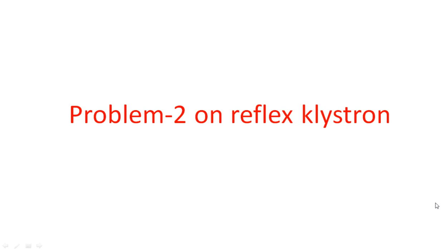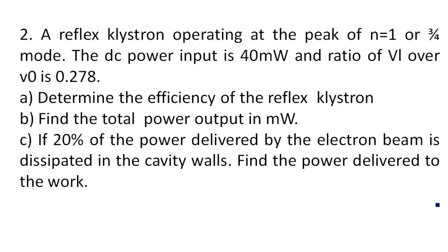In this video I am going to discuss a second problem on the reflex klystron, which is used to calculate the efficiency, the total output power, and the total output power when there is a 20% drop in the input voltage. The given values: a reflex klystron operating at peak of n=1, or 3/4 mode. From the spiral chart we understand that at n=1, the 3/4 mode means as we go away from the 0 point on the axis it will be 3/4, 1 3/4, 2 3/4, 3 3/4, each mode corresponding to 1, 2, 3, 4 on the x-axis.